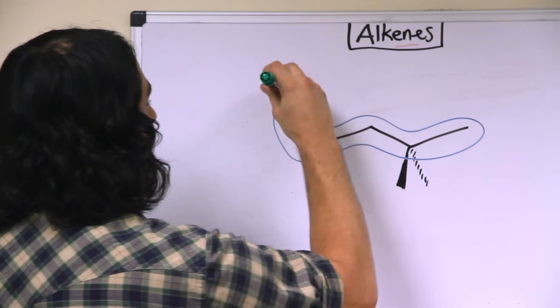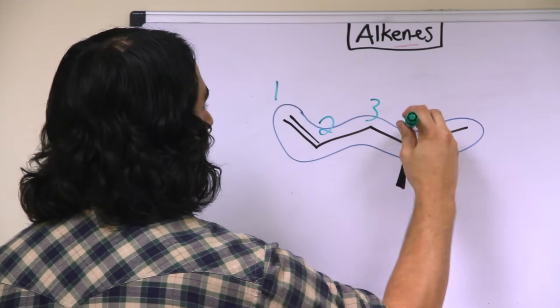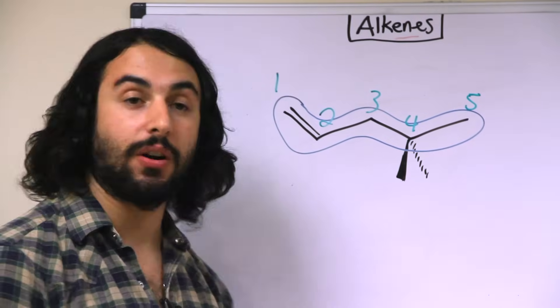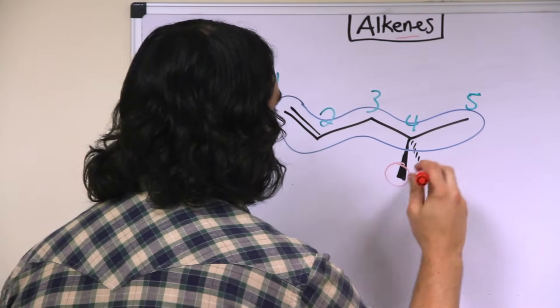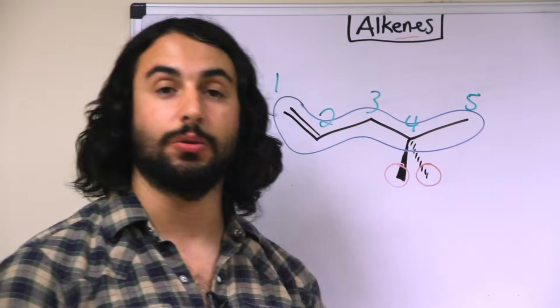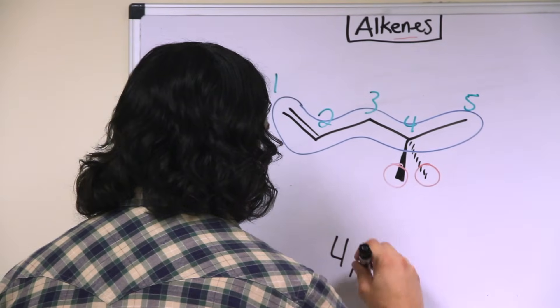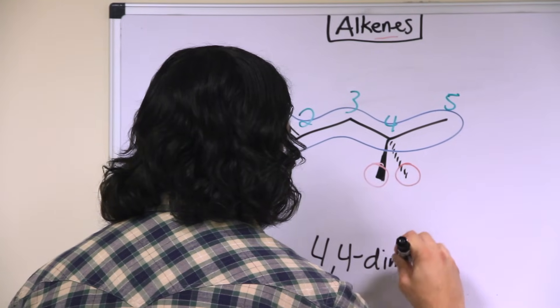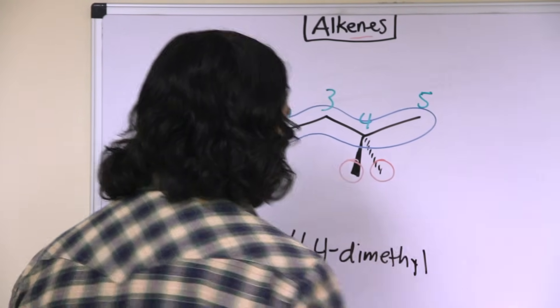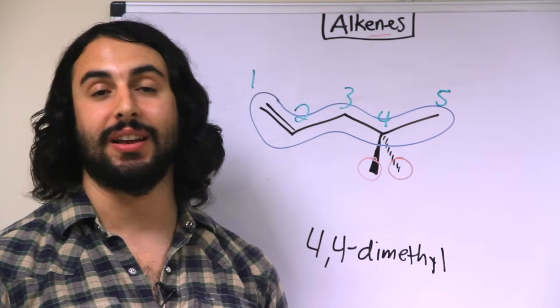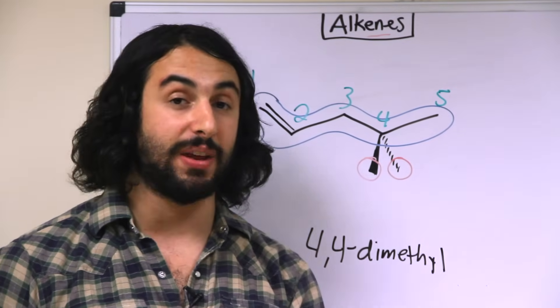So here, we're going to need to number left to right, so let's identify that there are two methyl groups over here on carbon-4, so we are going to list that first in the molecule. That's 4,4-dimethyl. We do need to list both of those, otherwise there would be ambiguity as to where the second methyl group would be.